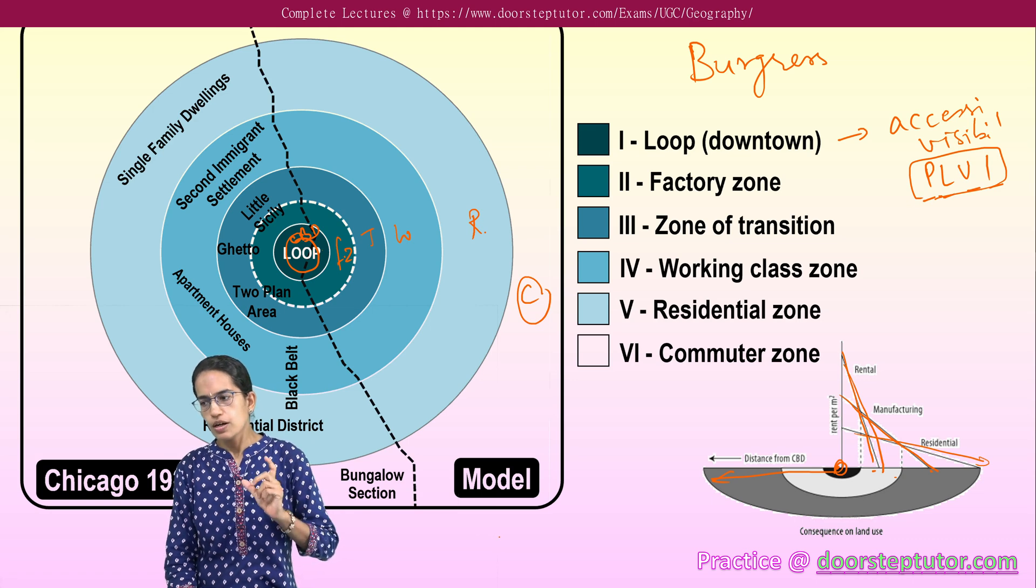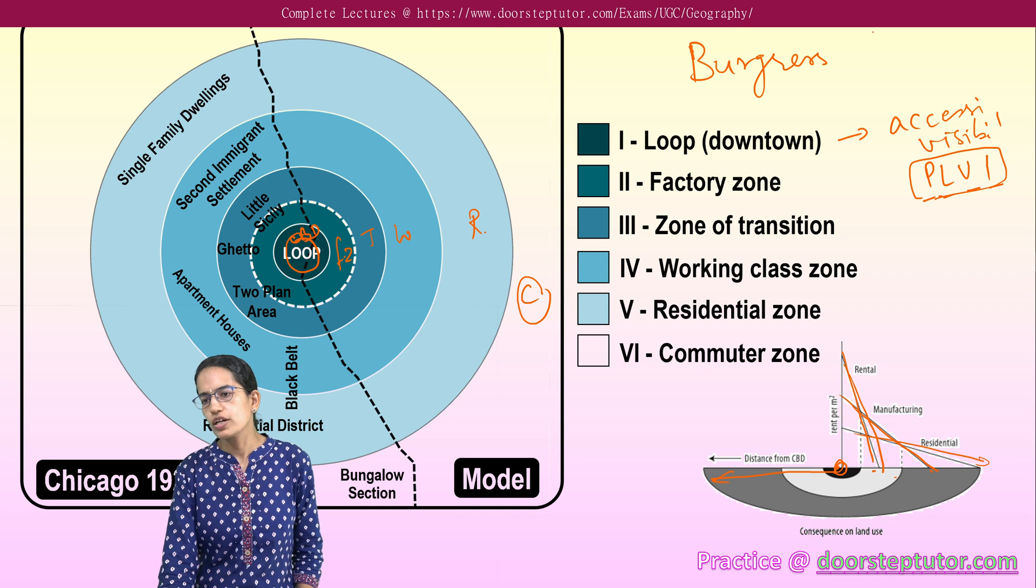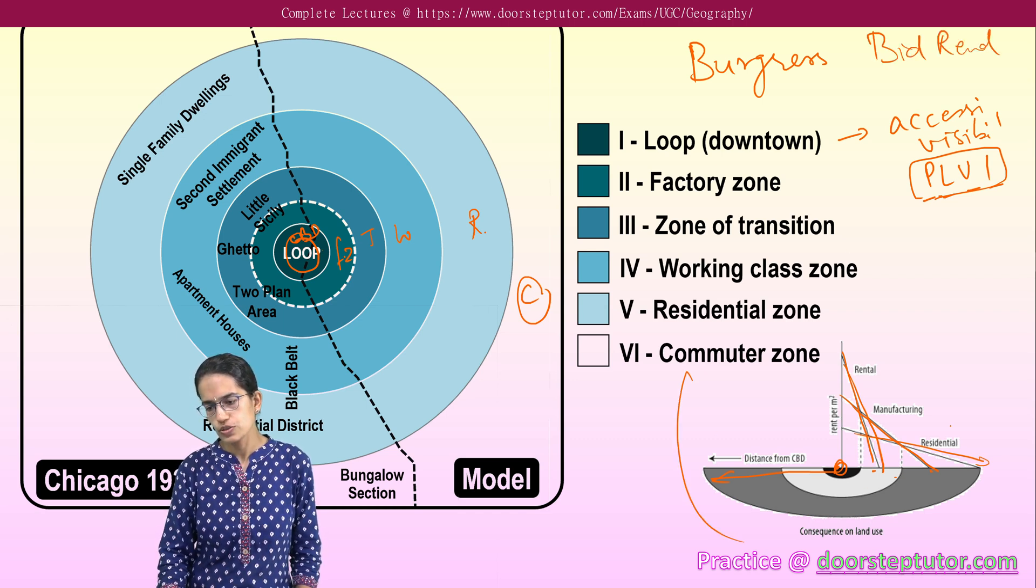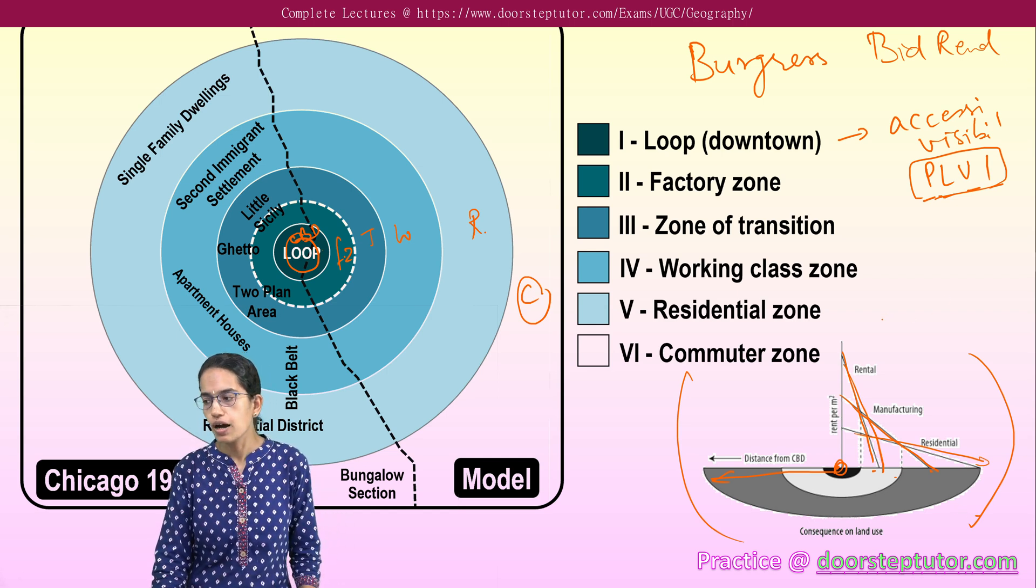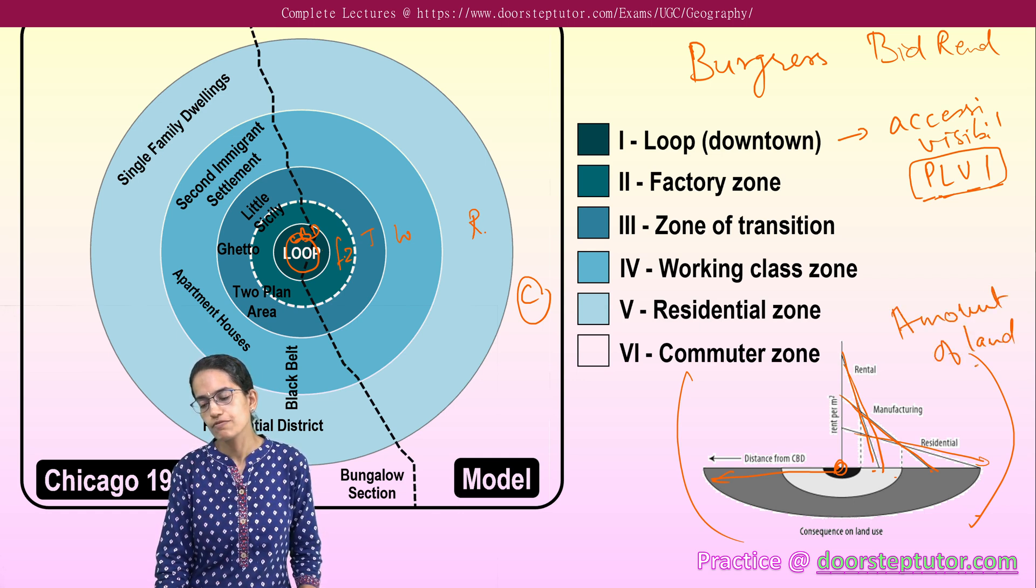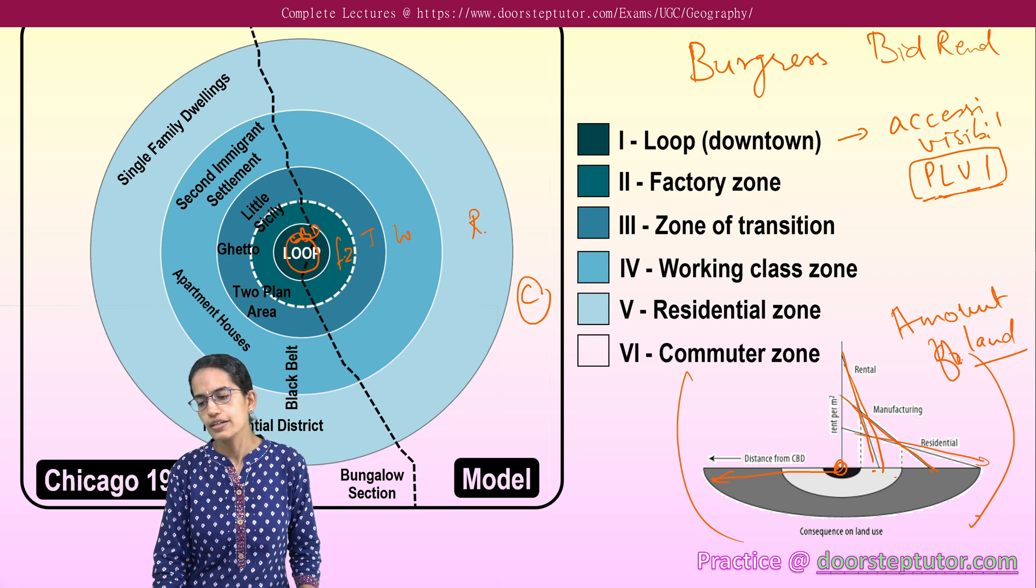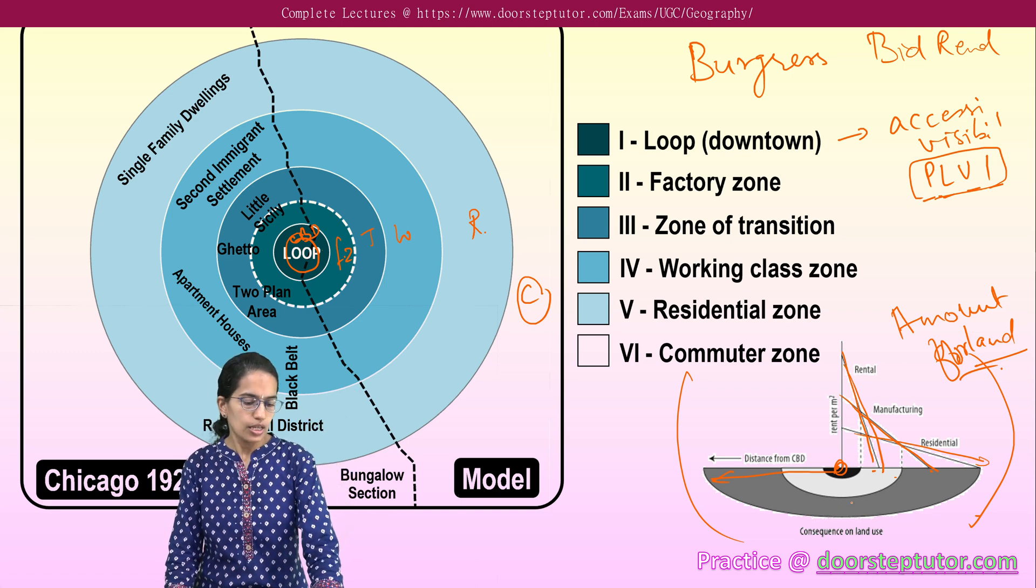This was what was the Burgess model. Burgess model focused on an important concept which is the bid rent theory and as you can see here is the demonstration for bid rent. The idea under bid rent is the amount people would have to pay for the land, which would be explained under the Burgess bid rent theory.